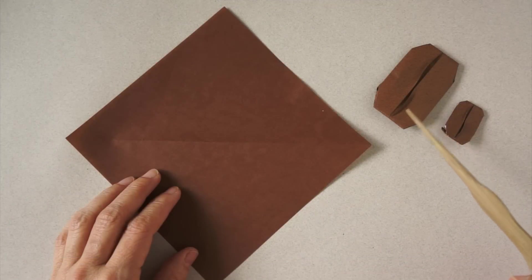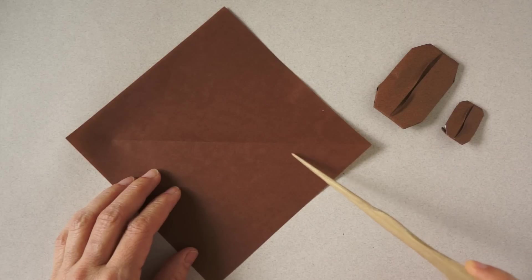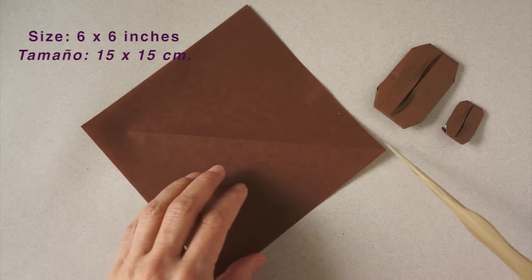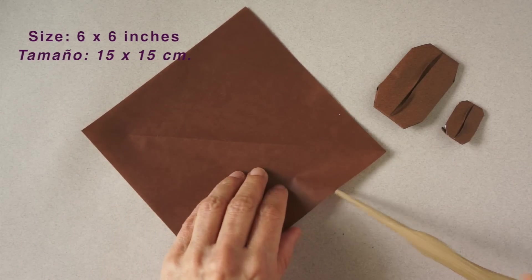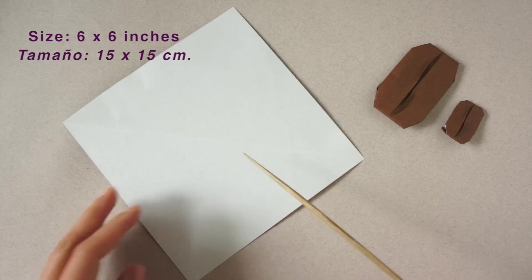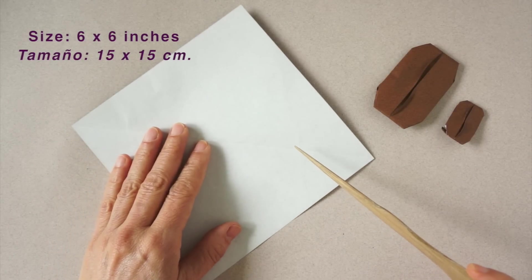To make this coffee bean we need a brown piece of paper. It can be brown on both sides. In this case I have white. We are going to begin with the white side up.